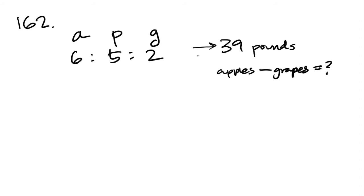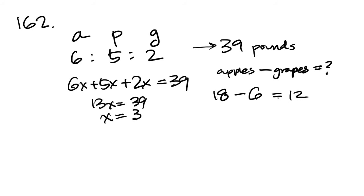162. A fruit salad mixture contains apples, peaches, and grapes in the ratio 6:5:2. I know this is a problem where we have to find the multiplier. And they gave us that there are 39 pounds prepared, and the mixture includes how many more pounds of apples than grapes? So apples minus grapes equals our answer. They gave us 39 pounds, so 6x plus 5x plus 2x equals 39, 13x equals 39, x equals 3. So apples is 6x, which is 6 times 3 is 18, minus grapes is 2 times 3, which is 6, and that gets us our answer, 12. And 12 is answer B.